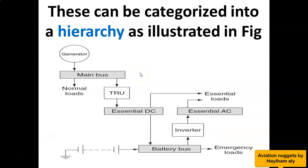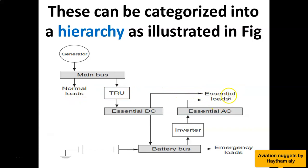Just in case a failure happens — like a generator failure or electrical wiring failure — you probably have heard about the load shedding process. Load shedding means we can switch off some loads to give priority to other loads. In case of generator failure, we can switch off normal loads to give priority to essential and emergency loads, because these loads affect the safe operation and safe landing of the aircraft.